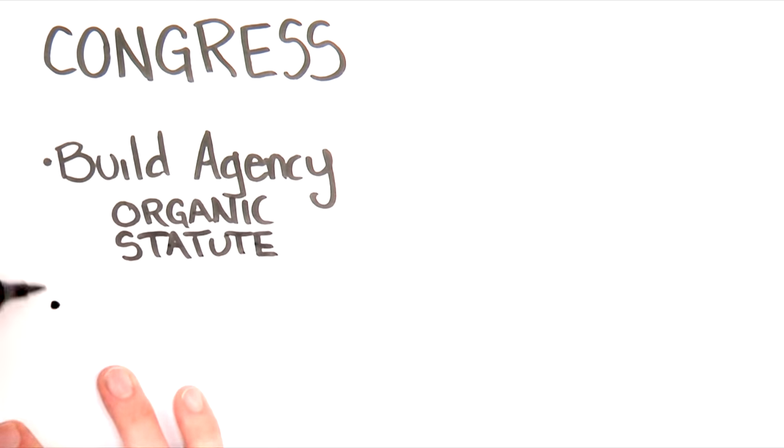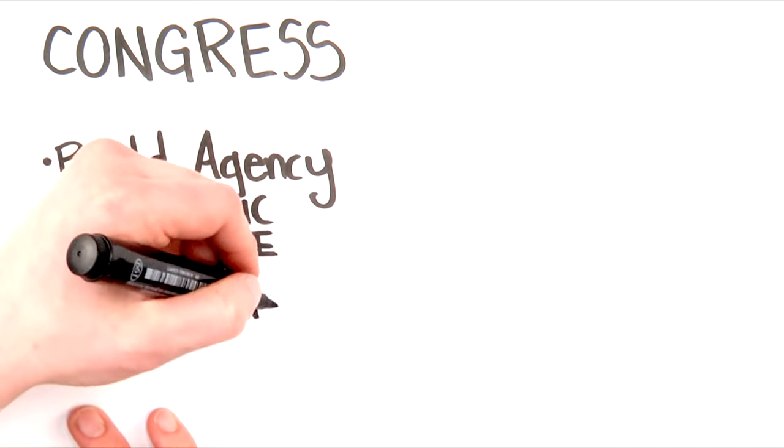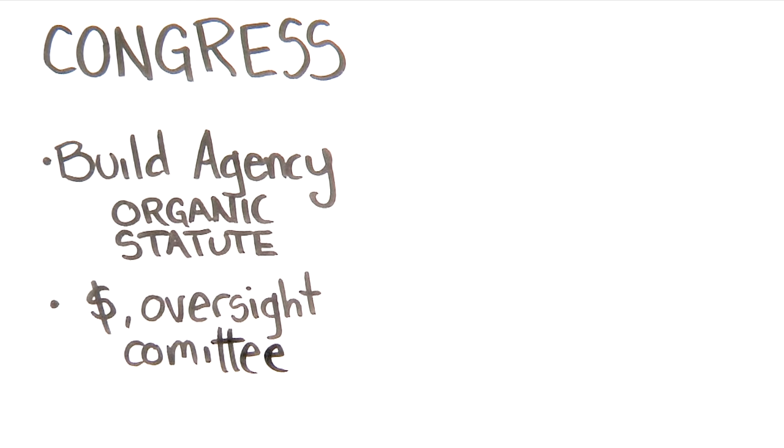Congress can call the agency head in front of a congressional committee and hammer them with questions. They can cut off funding for the agency if they want to, which will effectively disable it.